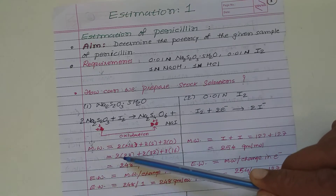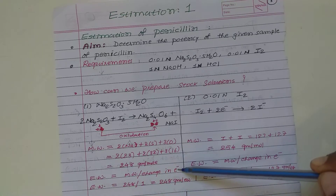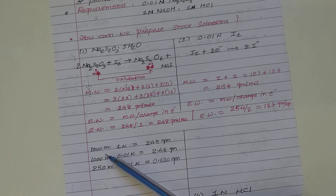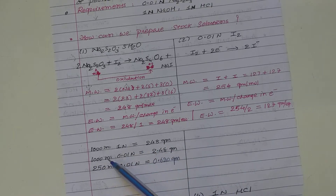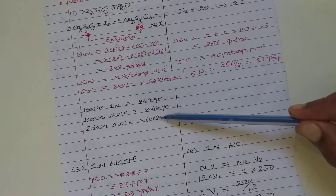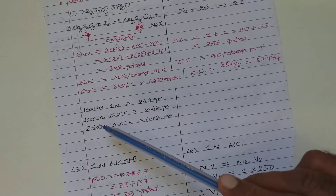The molecular weight of sodium thiosulfate is 248 g/mol. Equivalent weight equals molecular weight divided by change in oxidation number, so equivalent weight equals 248 upon 1, which is 248 g/equivalent. For 1000 ml of 1 normal solution, required weight is 248 g. For 1000 ml of 0.01 normal solution, required weight is 2.48 g. For 250 ml, required weight is 0.620 g. Weigh exactly 0.620 g of sodium thiosulfate, dissolve in distilled water, and make total volume to 250 ml.